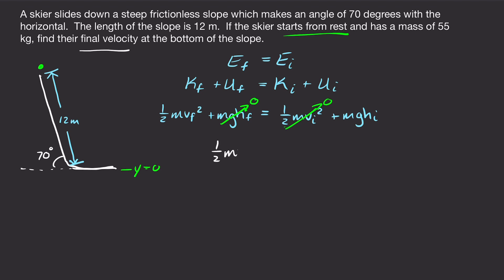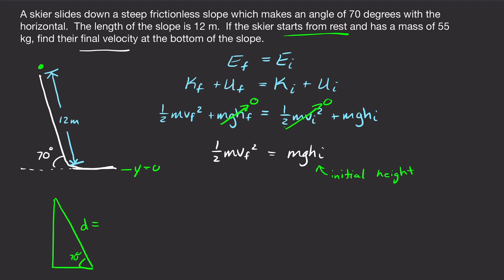Rewriting the equation: one-half mv final squared equals mgh initial. But we only know the length of the slope, not the height yet. To find our height, we make a right triangle: this is the 70 degree angle and the hypotenuse is the distance D, 12 meters. The height is the opposite side, so height equals D times sine of the angle — that's 12 meters times sine of 70 degrees.